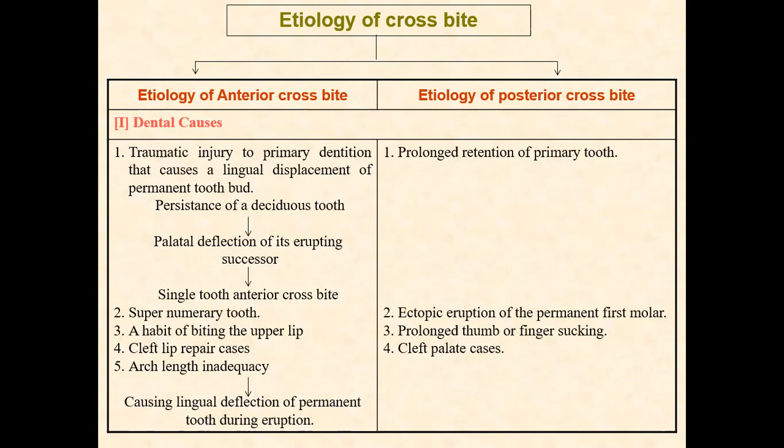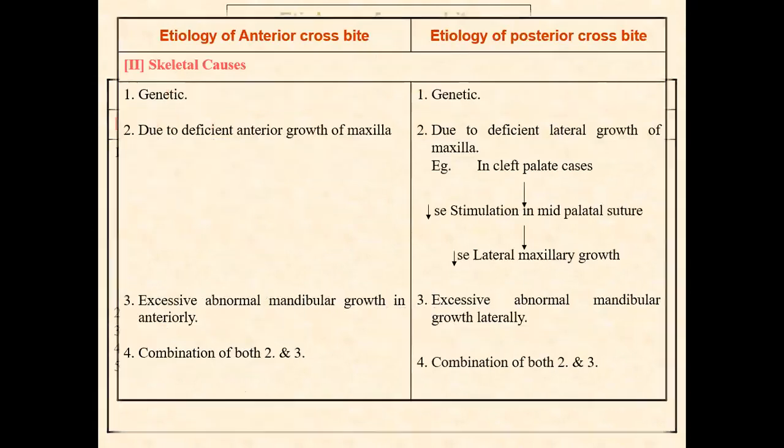A second cause is a supernumerary tooth in the path of eruption of the central incisors, causing them to deflect and erupt differently. Other dental causes include upper lip biting habit, cleft lip and palate repair cases, and arch length inadequacy — where a constricted arch leaves no space for the tooth, causing lingual deflection of the permanent tooth during eruption.